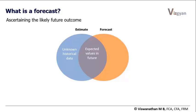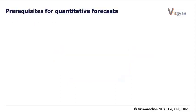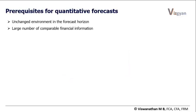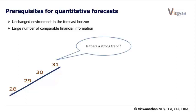Forecast involves ascertaining future outcomes. It can be done through a qualitative approach using samples and surveys, but it can also be done using quantitative techniques such as linear regressions and machine learning. However, to rely completely on quantitative analysis, there are certain preconditions. One is that the foreseeable future environment should remain unchanged and comparable to the past. The second is that we need large amounts of comparable data. Without that, it becomes difficult to ascertain whether the pattern we see is actually a trend or just a random coincidence.